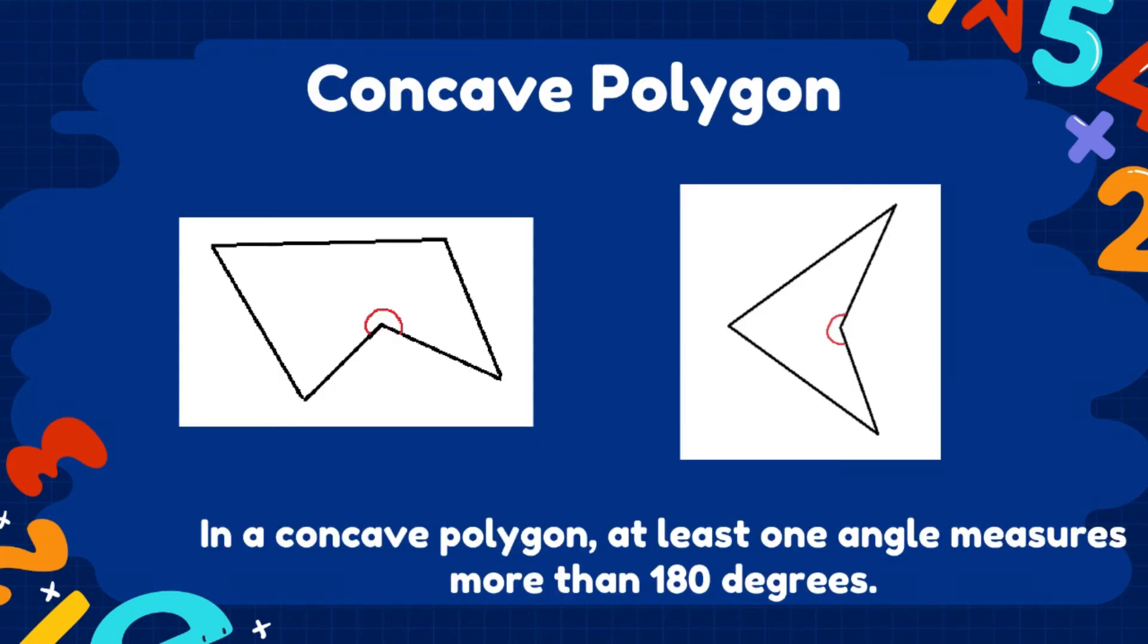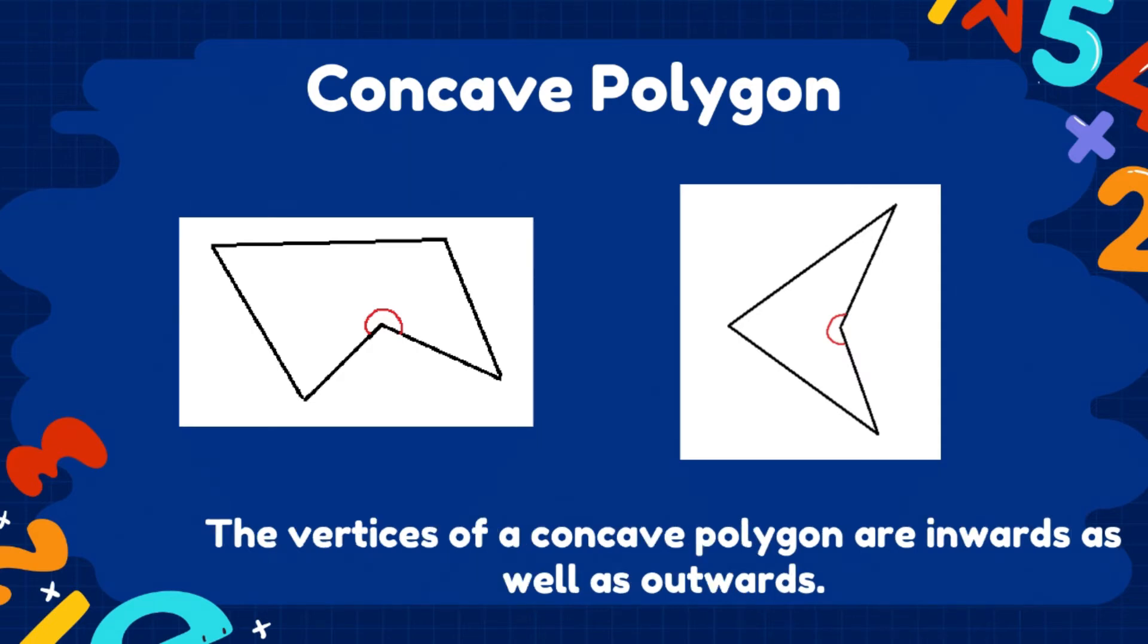On the other hand, we also have a polygon called as concave. It is a polygon where at least one of the angles measures more than 180 degrees. Also, the vertices of this polygon are pointing in both outside and inside. So those are the types of polygons: the regular and irregular polygon, and convex and concave polygons.